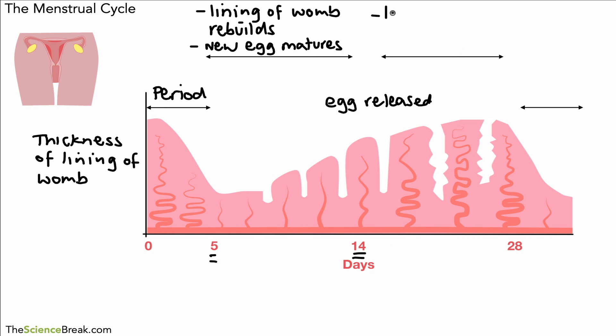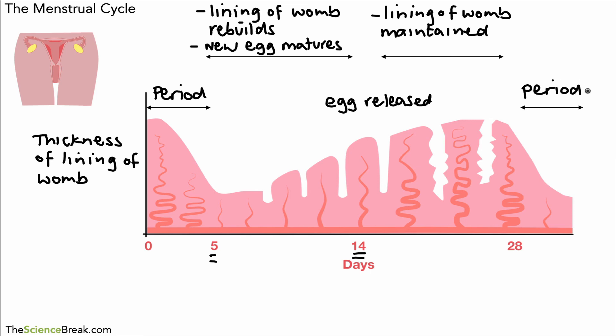After that we can see that the lining of the womb is maintained for a little while as the egg travels to the womb through the oviduct. That's shown in the diagram from day 14 up to day 28. Day 28 is the last day, which takes us back to day zero where we have the period or menstruation again, and you can see the lining of the womb becomes much thinner because it has been lost from the body during the period.